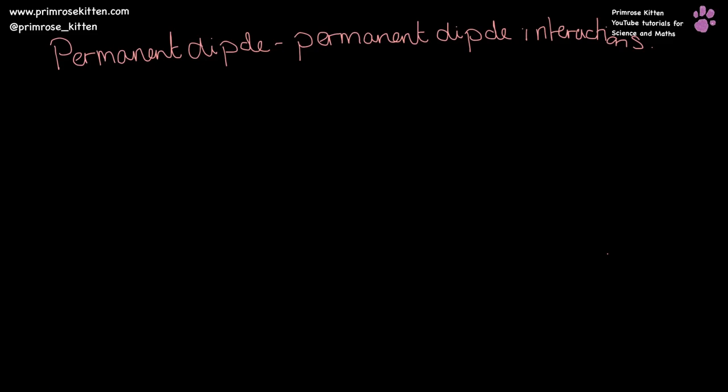I know permanent dipole-permanent dipole interactions is a little bit of a mouthful, and it's quite a lot to write as well. But please, please, please write it out in full. Do not use any abbreviations. You will not get credit for it in the exam.